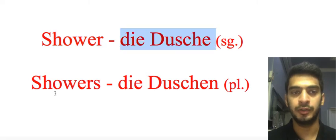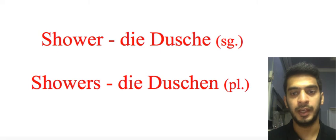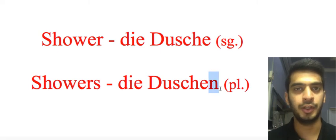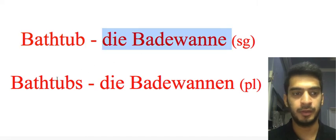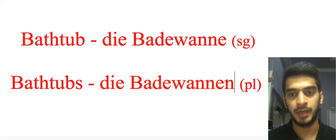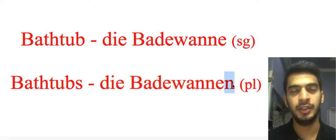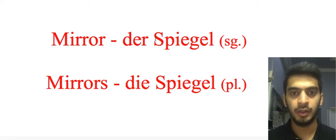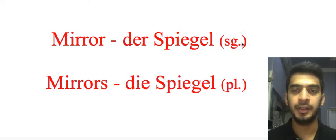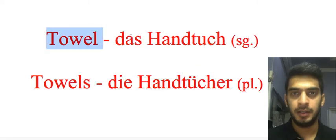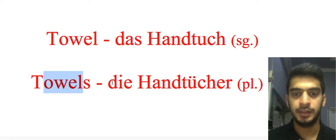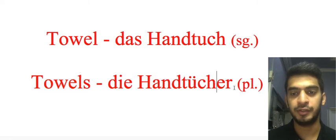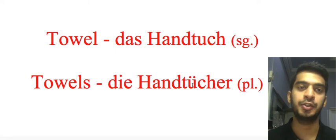'Bathtub': 'die Badewanne' — singular; 'die Badewannen' — plural, extra N at the end. 'Mirror': 'der Spiegel' — singular; 'die Spiegel' — plural. Both words are completely the same. 'Towel': 'das Handtuch' — singular; 'die Handtücher' — plural, with ER at the end and U with umlaut, so we call it 'die Handtücher'.